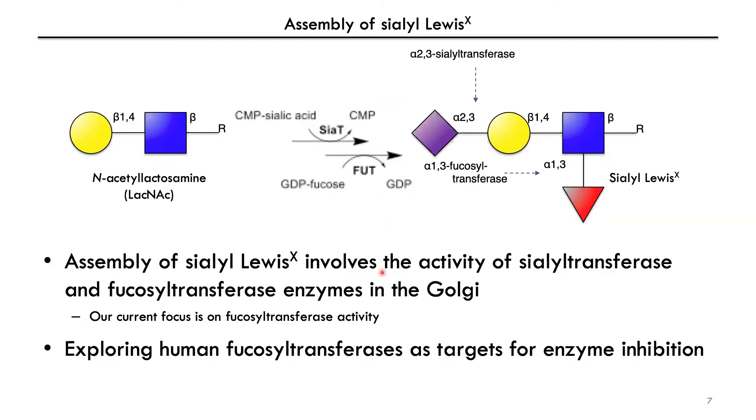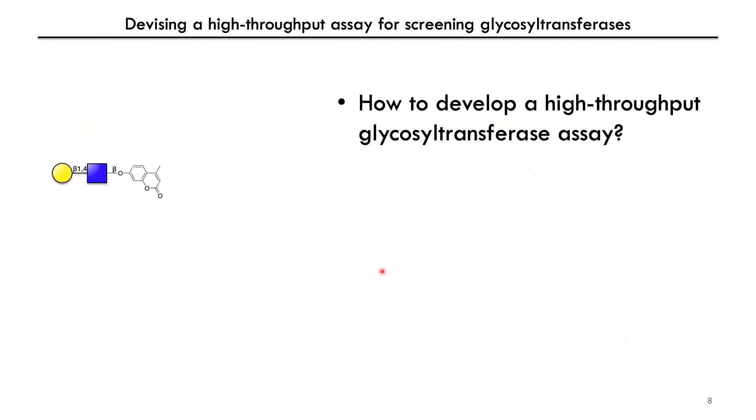Sialyl Lewis X is assembled from a precursor common N-acetyllactosamine backbone precursor on cell surfaces. It involves both sialylation and fucosylation by enzymes in the Golgi — a sialyltransferase and a fucosyltransferase. In our work we're looking at the fucosyltransferase enzyme active in the Golgi. We want to see if we can target this for inhibition and devise a way to identify inhibitors to these glycosyltransferase enzymes, looking first at fucosyltransferase. To do this, if we're going to screen large libraries of compounds, we need a high-throughput glycosyltransferase assay.